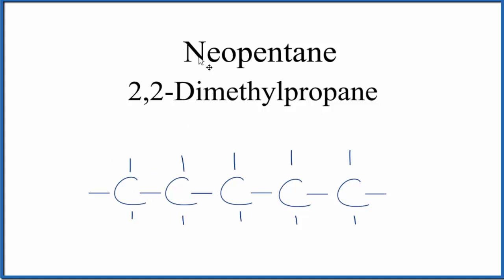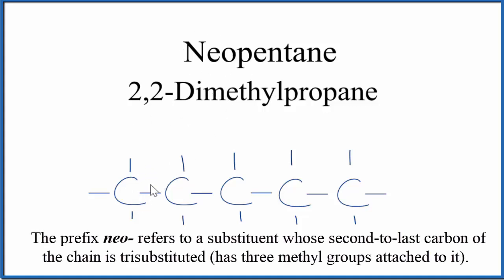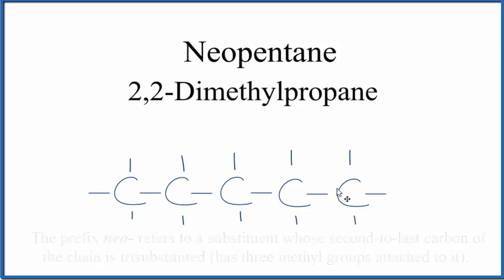When you see the prefix neo, that means the second to the last carbon in the chain has three methyl groups on it. So here's our second to last carbon. It already has this one methyl group, this CH3 bonded to it. So to have three, we just need to add two more.